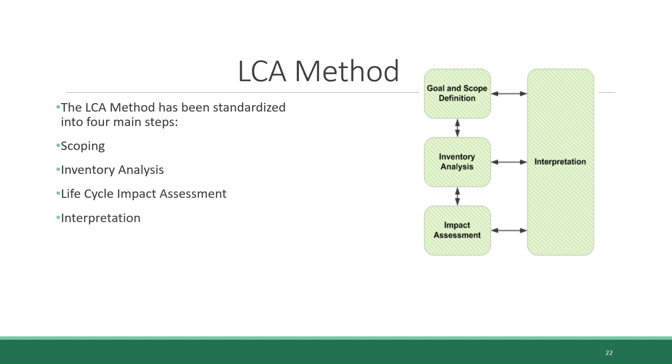The first three can be thought of as being done sequentially, meaning, for example, that the goal and scope are first defined before doing the inventory analysis, and the inventory analysis is done before doing the impact assessment. And much like writing a paper, after learning more about the next step in the process, it may require readjusting the previous step. But overall, this is a stepwise process. However, interpretation must occur at each step of the process.